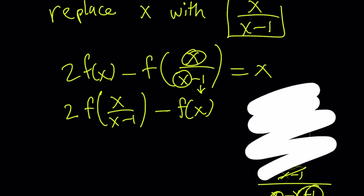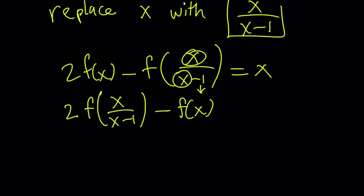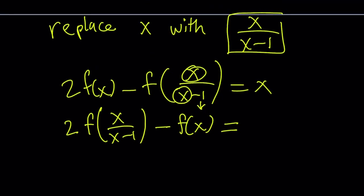So that's what we do. Replace x with that. And obviously, you have to do it on both sides. So the right-hand side is going to give me x over x minus 1.